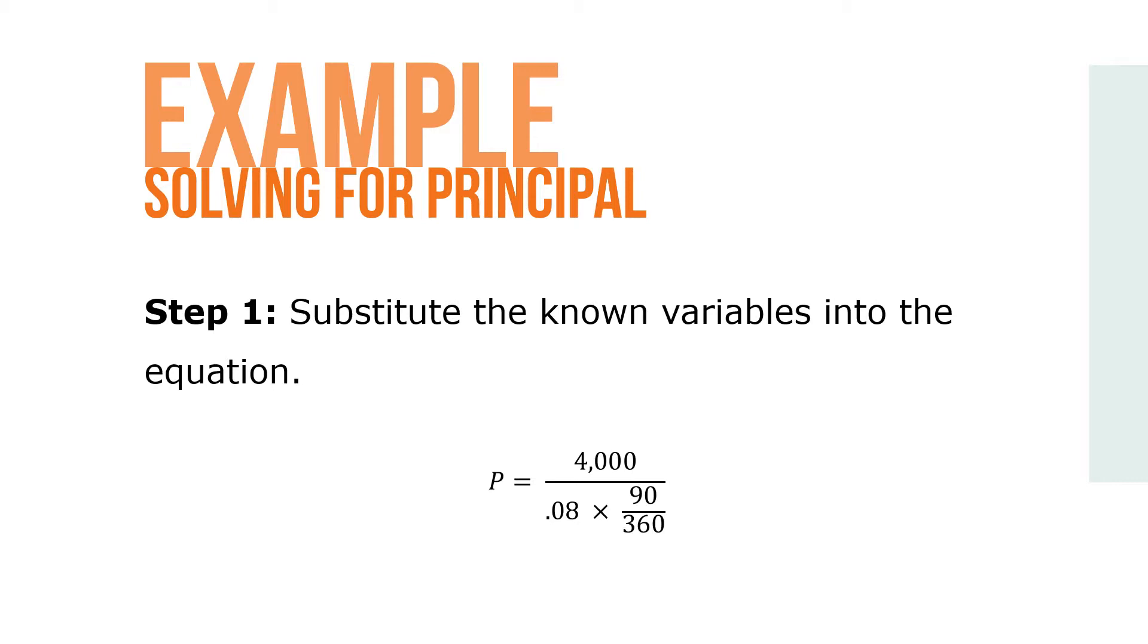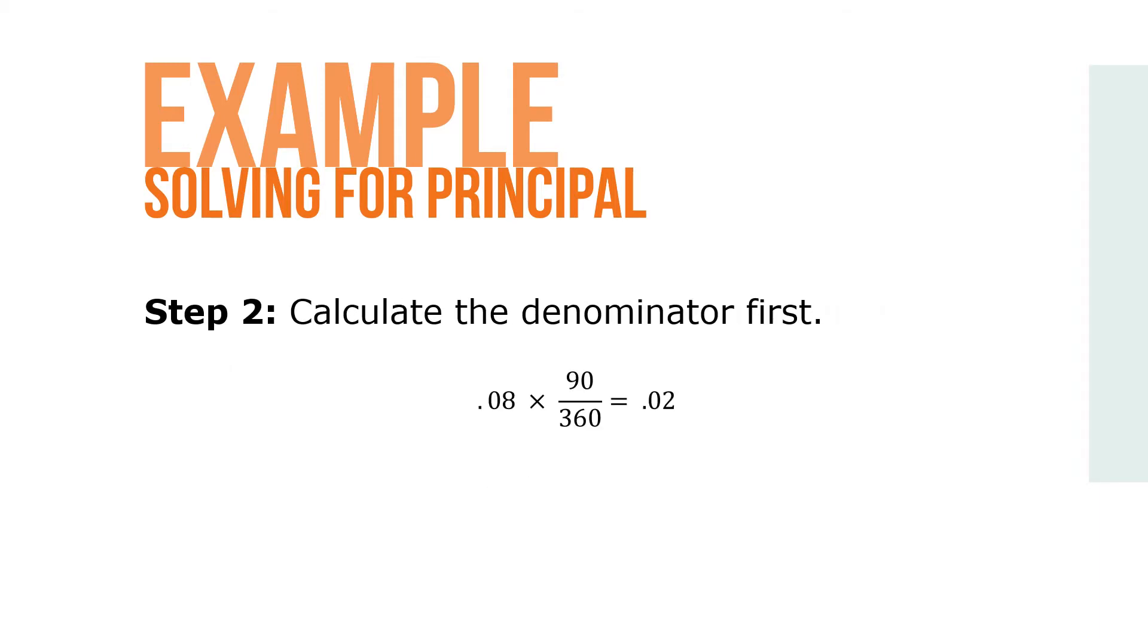First, substitute the known variables into the equation: 4000 over 0.08 times 90 over 360. Step 2: Calculate the denominator first. So 0.08 times 90 over 360 equals 0.02.